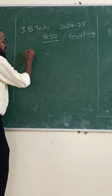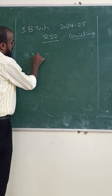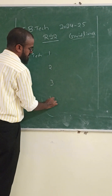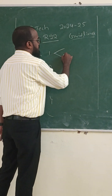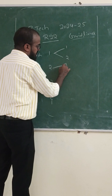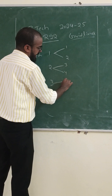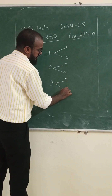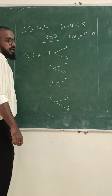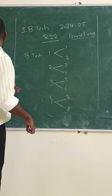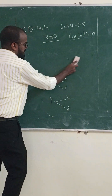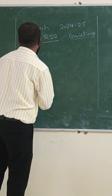We know that the B.Tech course is for 4 years — that is years 1, 2, 3, and 4 — and each year consists of 2 semesters. Semesters 1 and 2 in the first year, 3rd and 4th in the second year, 5 and 6 in the third year, and 7 and 8 in the final year. This is about the course of study, and now we will discuss R22 regulation.